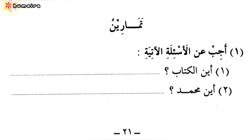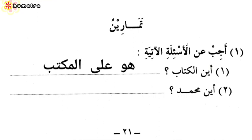أين الكتاب? Where is the book? We could say هو على المكتب — It is upon the desk. But we're going to use the pronoun هو. Why? Because the book is a masculine object. We're not going to use هي here.